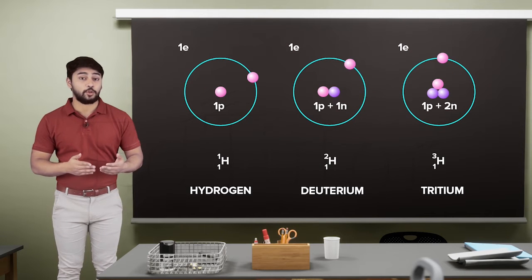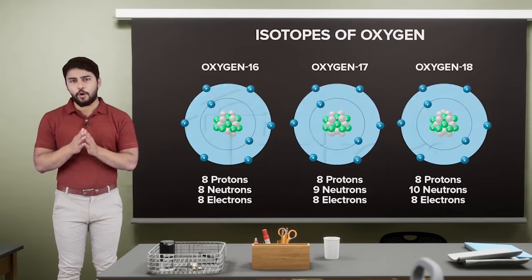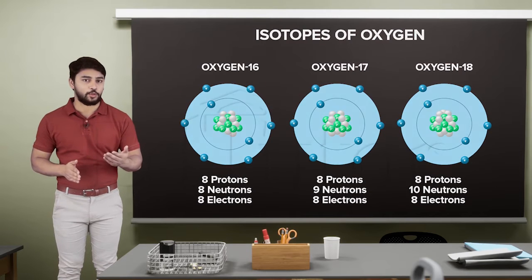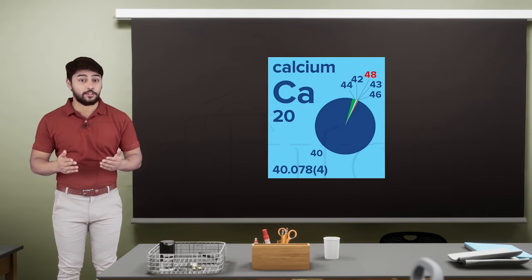Similarly, there are three isotopes of hydrogen with a different number of neutrons. Oxygen also has 3 isotopes, nickel has 5 isotopes, calcium has 6 isotopes.